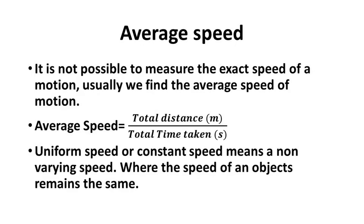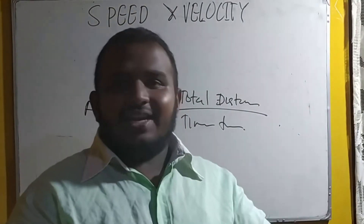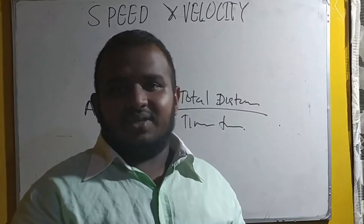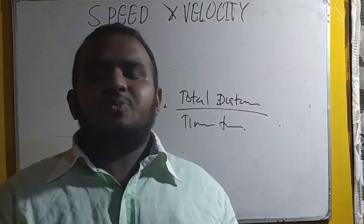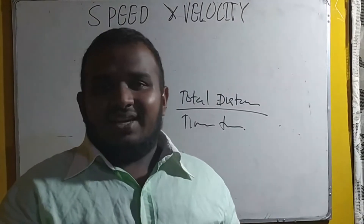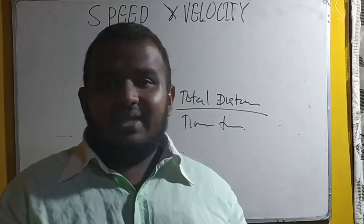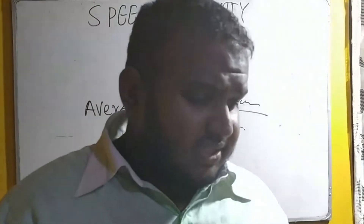Constant speed, or uniform speed — the term constant means not changing, and uniform means exact. A constant speed is a speed which will never vary. It will be the same value for the entire motion. If it is 3 ms⁻¹, it will remain 3 ms⁻¹ throughout. A uniform or constant speed is a fixed value — that is what we call a constant speed.